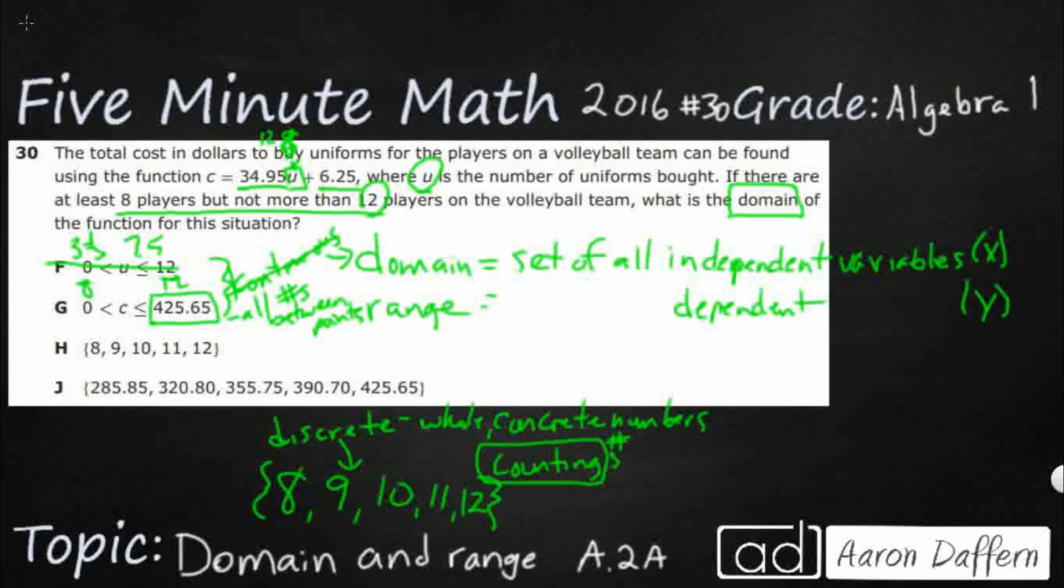And you see they tried discrete data right here. This is actually the range on J. They took the 8, 9, 10, 11, 12 and plugged it in. And that's your actual range. But our domain is going to be H.